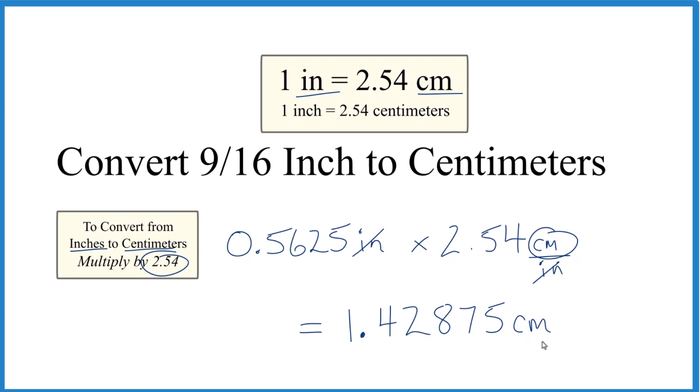That's why we know we have centimeters here. We should also note that since we're going from inches to centimeters, this number is getting bigger. So 1.43 is larger than 0.5625, which tells us that we correctly converted 9/16 of an inch to centimeters.